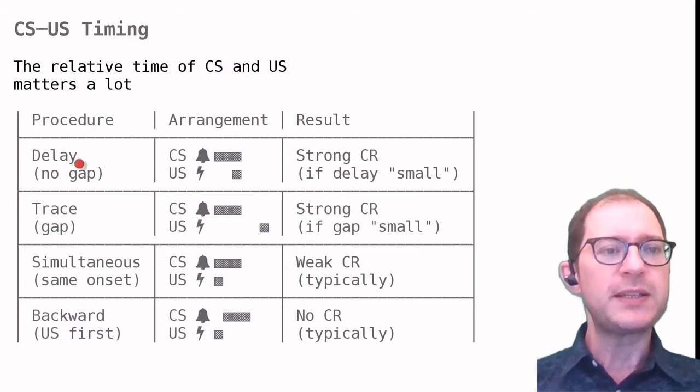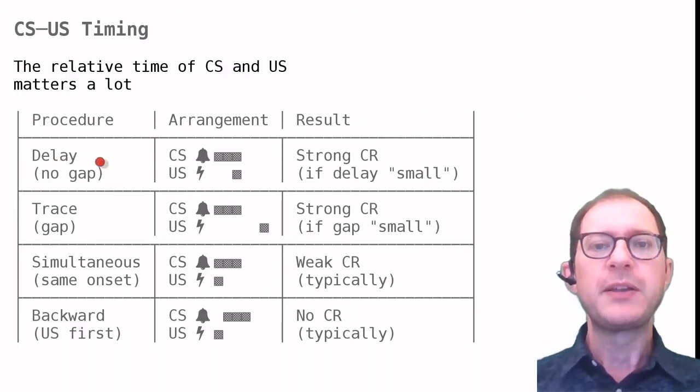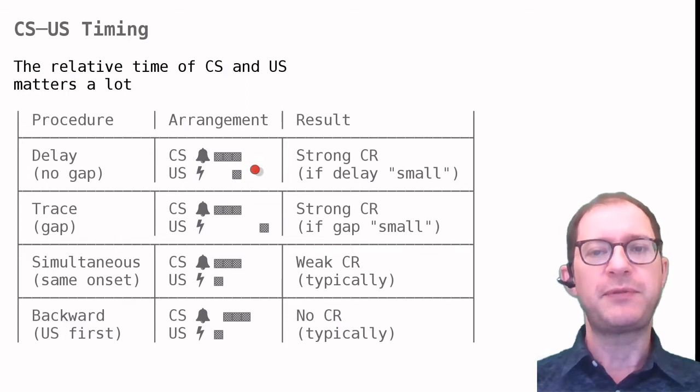The most typical arrangement is called delay conditioning, which means that the CS is turned on, and after some time, the US happens, just as the CS is being turned off. The time between the CS turning on and the US is called the delay. This is the most used procedure, as it is typically the most effective.